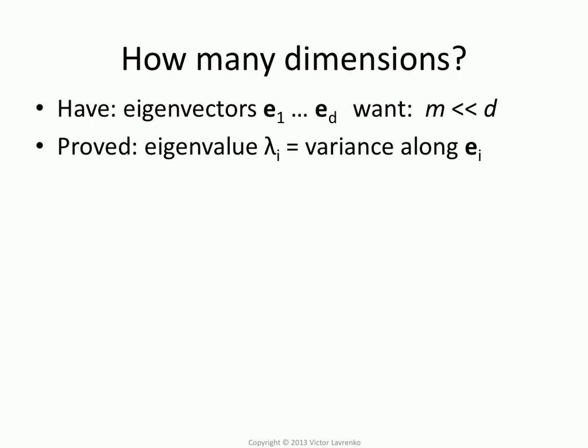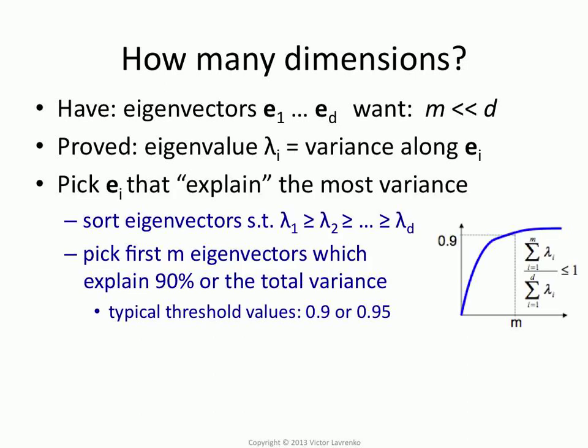We showed that the eigenvalue is the amount of variance, so we're going to pick the biggest ones. But where are we going to stop? How do we decide how many to pick? Well, one solution is kind of natural.